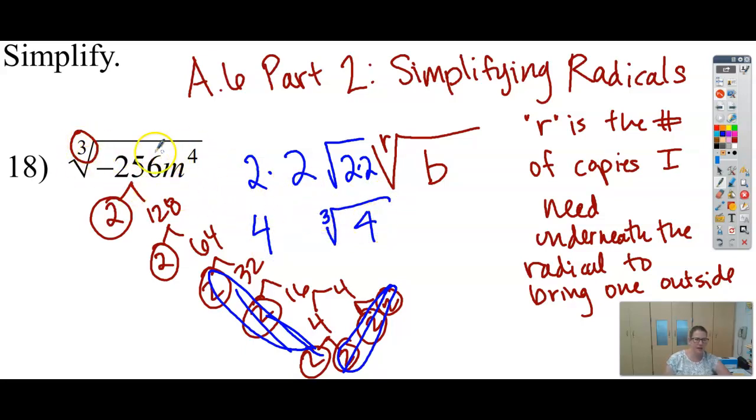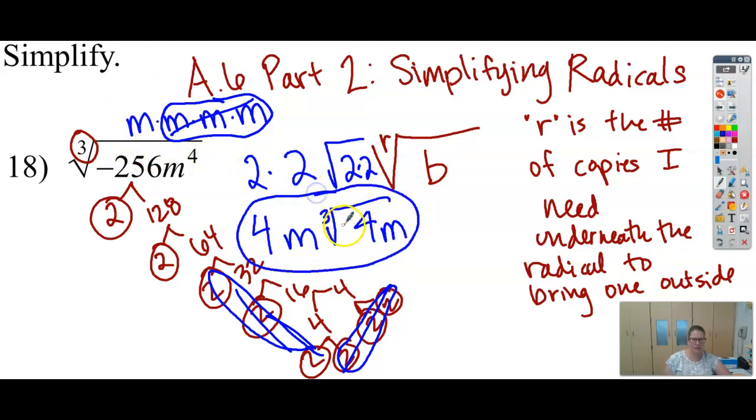This would still be a cube root, so I've got a 3 here. And now I just need to think about this m to the 4th. So m to the 4th is m multiplied together 4 times. Since I'm looking for 3 copies, for those 3 m's, I can bring 1 outside. And because that one is all by itself, I would need to leave it inside. So this would be my simplified radical.